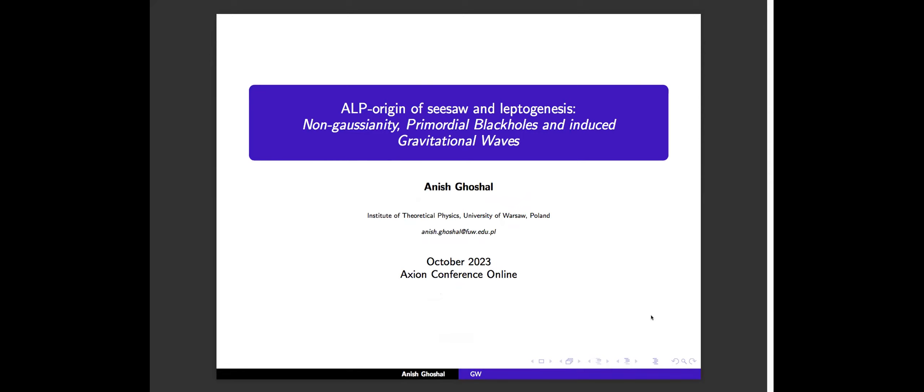Thank you for the opportunity to present this work. This is a series of works I have been doing for the past one year. The idea is that we are going to look at axion-like particles and the cosmology related to them. I'll try to convince you that if there are axion-like particles present in the early universe, then we have ways to look at baryogenesis, and those aspects can be probed via cosmological observables like non-gaussianity, primordial black holes, and induced gravitational waves.